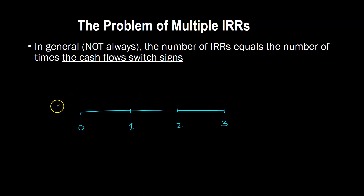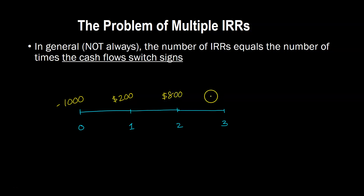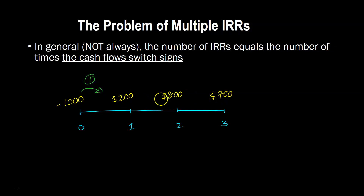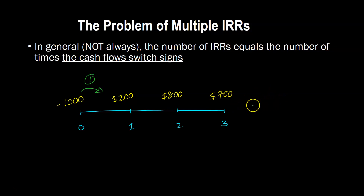For example, suppose your project has an upfront investment of $1,000, and in year one generates $200, then $800, then $700. You don't have any problems here because the number of times cash flows are switching signs is just one — going from negative to positive, and then all cash flows are positive. One sign switch means one IRR, so there's no multiple IRR problem. This is an example of a project with conventional cash flows.